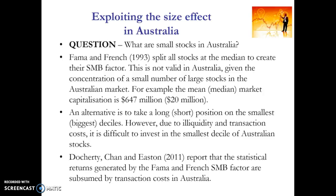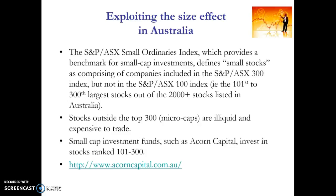Research suggests that the statistical returns generated by the size effect in Australia are really subsumed by transaction costs because these companies are so small. There are some funds that do attempt to exploit the size effect by looking at the smallest companies listed on the ASX 300 index — for example, defining the top 100 stocks as large and between stock number 101 and 300 as small cap, and between 300 and 500 as micro cap stocks.